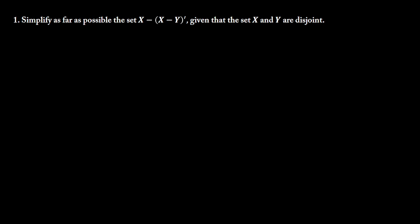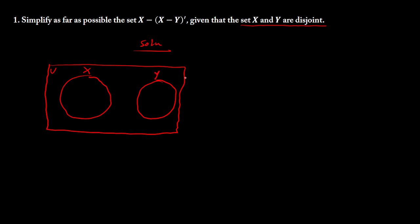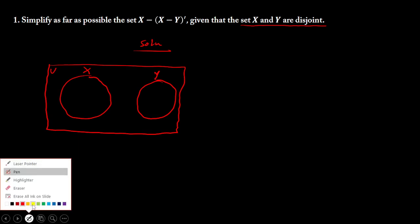The first question says: simplify as far as possible the set X minus (X minus Y)', given that sets X and Y are disjoint. The first thing I need to understand is what it means that X and Y are disjoint sets. So we have set X and set Y within a universal set, and being disjoint simply means there is no intersection between the two.